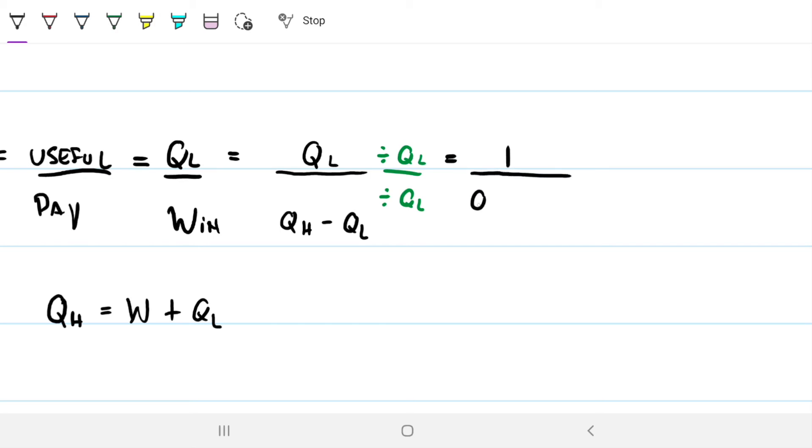On the bottom, I'm going to have QHot divided by QL minus 1 as well. So that's another way of finding out our coefficient of performance.